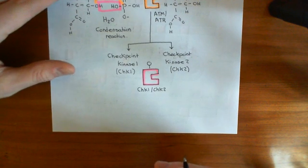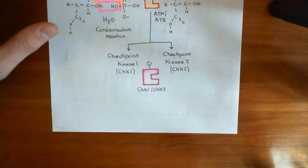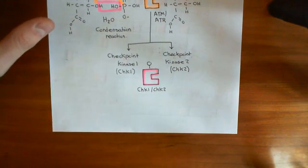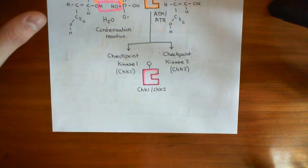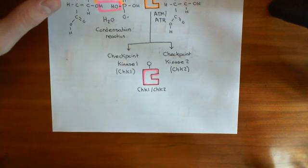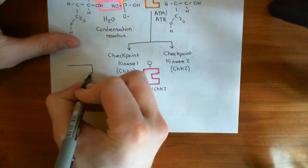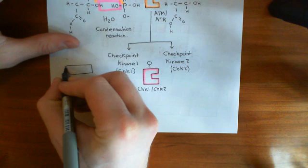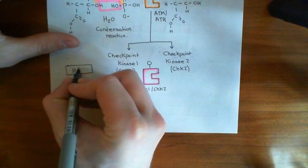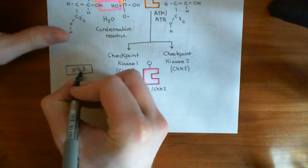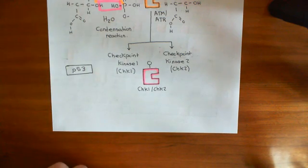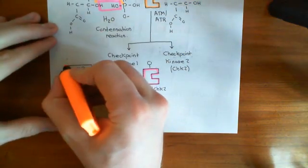So before I tell you about the phosphorylation of P53, I need to tell you a little bit about how P53 in a normal cell is kept turned off. So usually in a normal cell, we are producing P53 continuously. This is tumor suppressor protein P53, the guardian of the genome. So we're always making a little bit of P53. But how do we stop it from working?